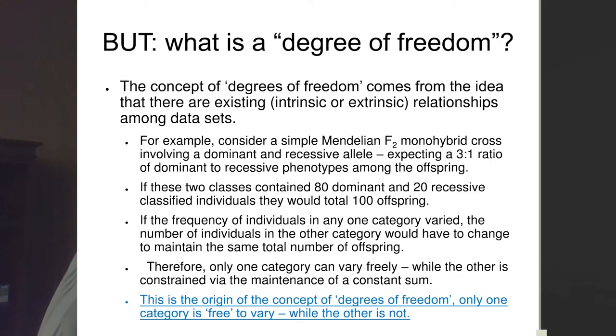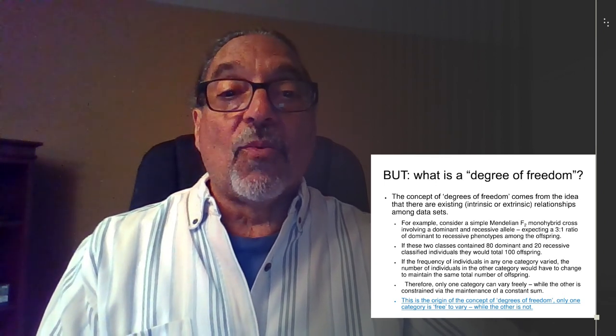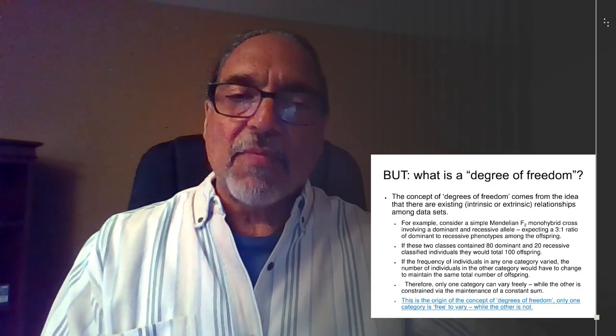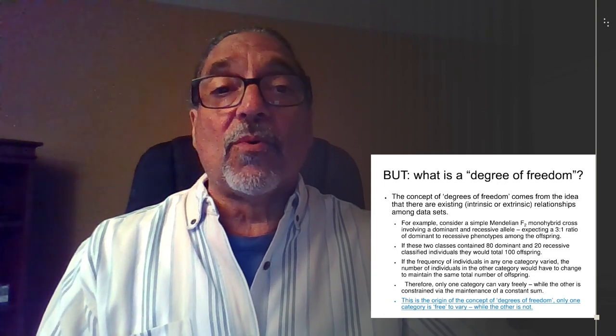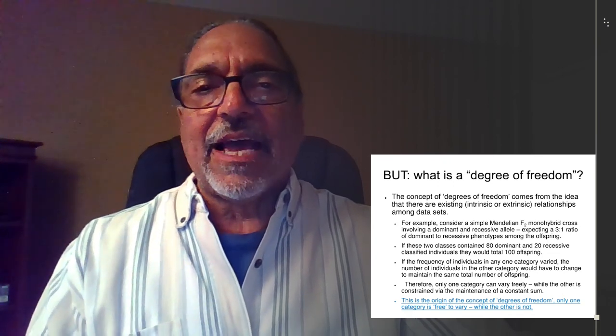If we had an F2 dihybrid cross with a 9:3:3:1 ratio, that's four phenotypic categories. What would be the number of degrees of freedom? Pause and think. You should be saying four minus one equals three. Why didn't I tell you that at the beginning? As statistical models become more complicated, the calculation of degrees of freedom is not so simple. It's not as easy as just subtracting one. For our purposes it works that way, but that's not always the case in statistics.